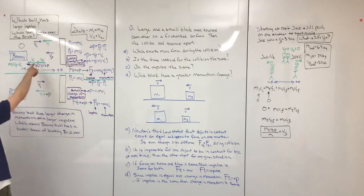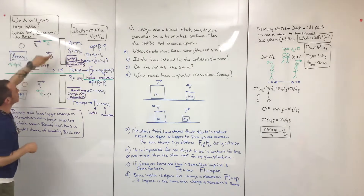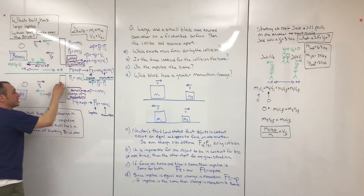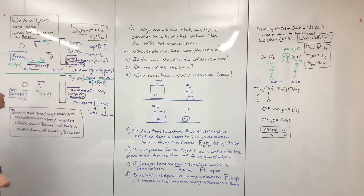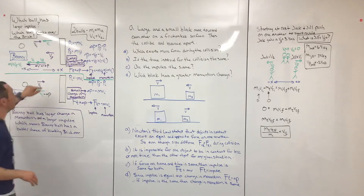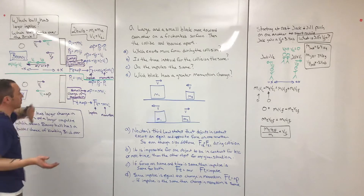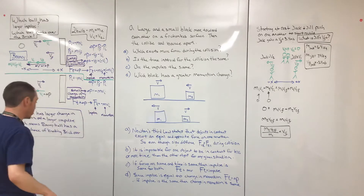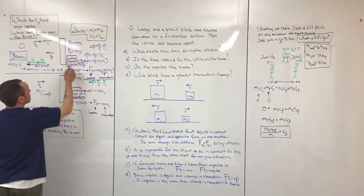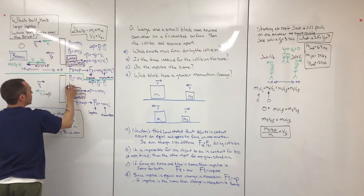So we start to look at these situations. The bouncing ball is going to have an initial velocity in one direction and a final velocity in the opposite direction, where the sticky ball is just going to have an initial velocity and then it's going to stick — so there's no final velocity for the sticky ball. For the sticky ball, we know the p-final is going to be zero.